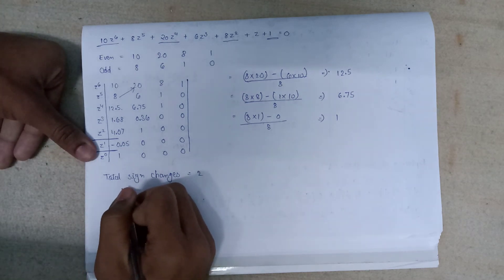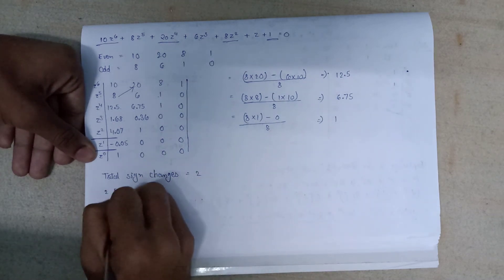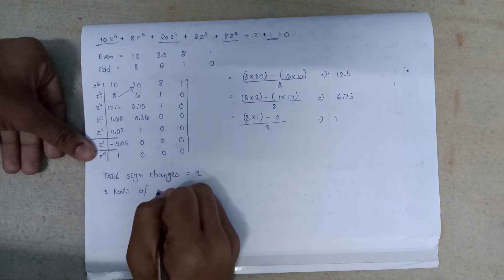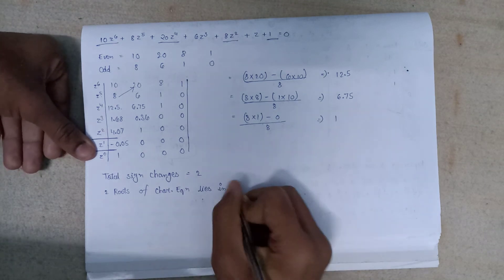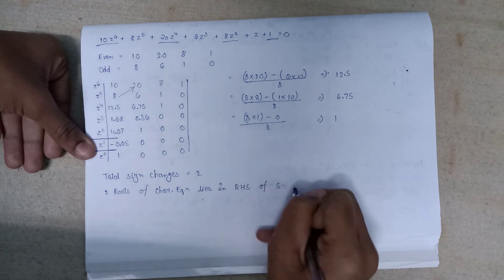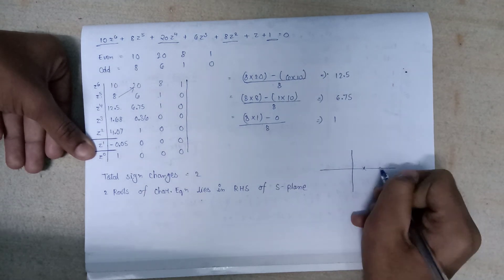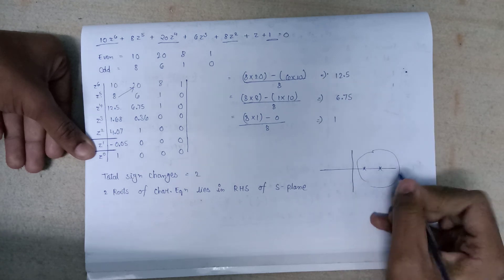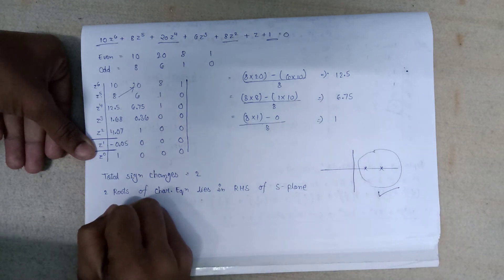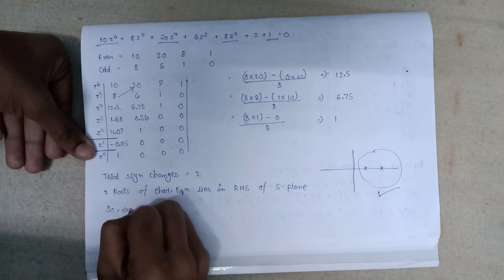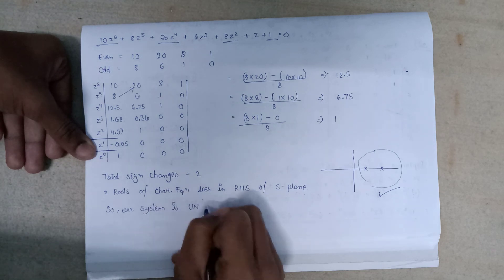This means that 2 roots of the characteristic equation lie in the right-hand side of the S-plane. Since 2 roots lie in the right-hand side of the S-plane, we can easily say that our system is unstable.